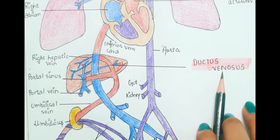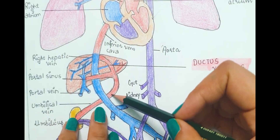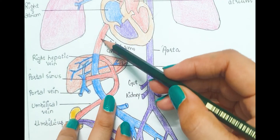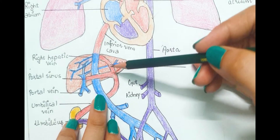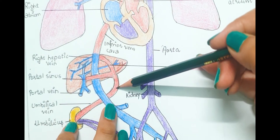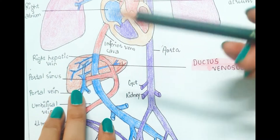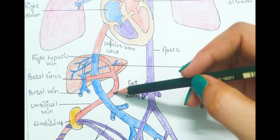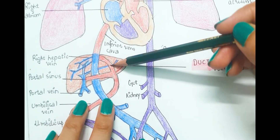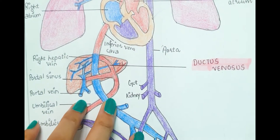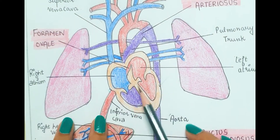The first shunt is the ductus venosus. In this diagram you can see the liver, umbilical vein, and inferior vena cava. The ductus venosus is the shunt present between the umbilical vein and inferior vena cava. To bypass the liver, blood moves directly from the umbilical vein to the inferior vena cava through the ductus venosus.